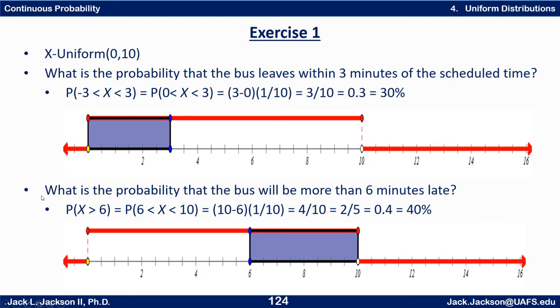So what's the probability that the bus leaves within three minutes of the scheduled time? That goes up to three minutes before the scheduled time or up to three minutes after which would be the probability that x is between negative 3 and 3. But x can't be less than 0 in this particular scenario. So this is the same as the probability that x is between 0 and 3. Okay well that's just the area of this rectangle here which has a width of 3. 3 minus 0 is 3. And a height of 1 tenth so that's just 3 tenths, 0.3, 30 percent.